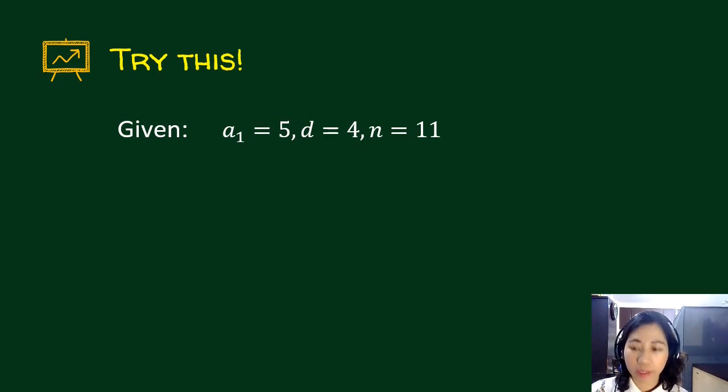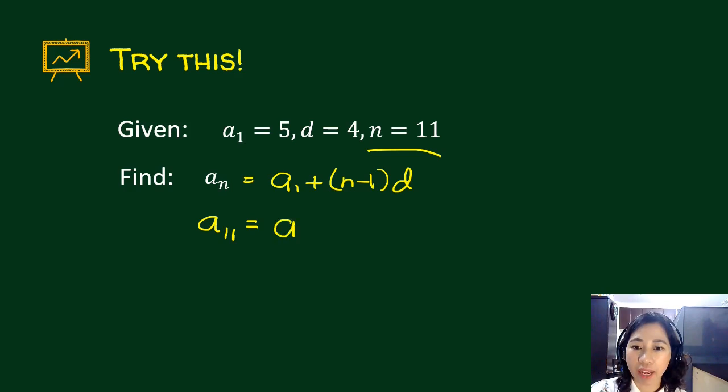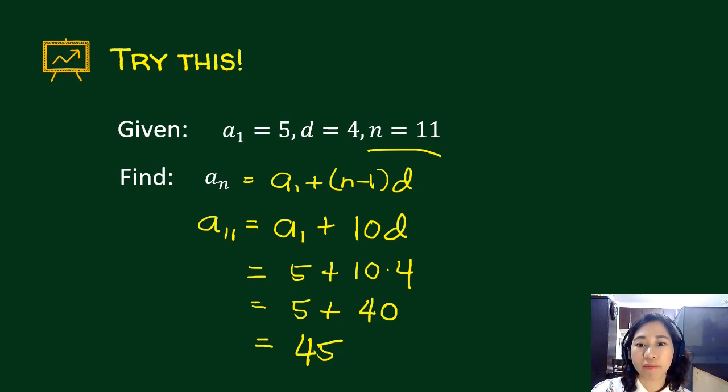So you may try this. You may pause your video and answer this one. You're given a sub 1 is 5, d is 4, and n is 11. Find a sub n. Since n is 11, we are looking for a sub 11. Let's write the formula for a sub n. Since our n is 11, a sub 11 is a sub 1 plus 11 minus 1, which is 10, and then times d. And then we just have to plug in the values. a sub 1 is 5, and then d is 4. So remember, PEMDAS, multiplication comes first before addition. So the answer is 45.